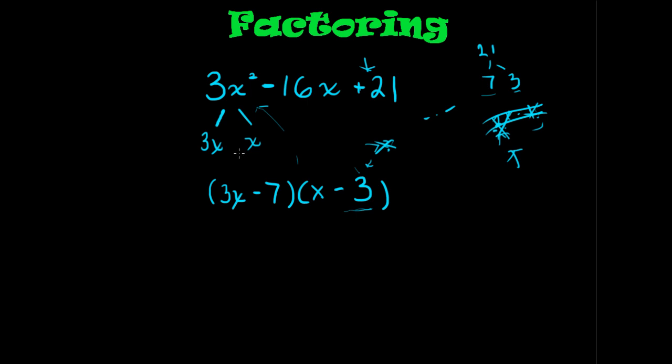Notice, the first term is already figured out. 3x times x is 3x². The last term is also figured out. -7 times -3 is positive 21. All we have to see now is if, when we distribute or add up the other two terms, if they equal -16x.